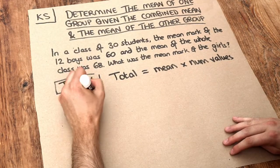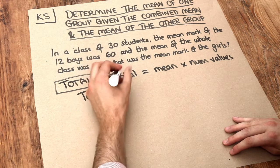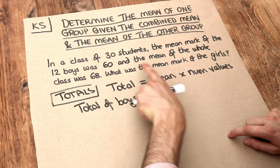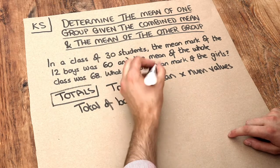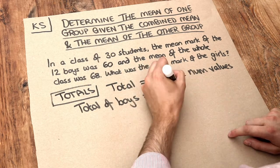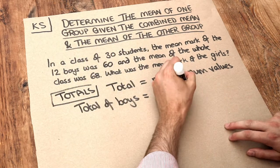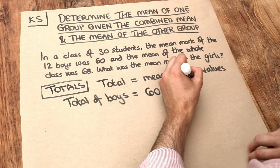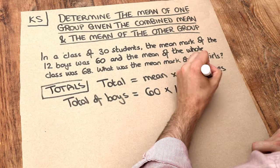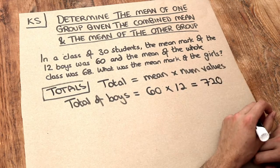So let's work out the total of the boys. We've got a mean of 60 for those boys, and how many boys were there? 12. So when we do 60 times 12, that gives us 720. That was the total mark of the boys.